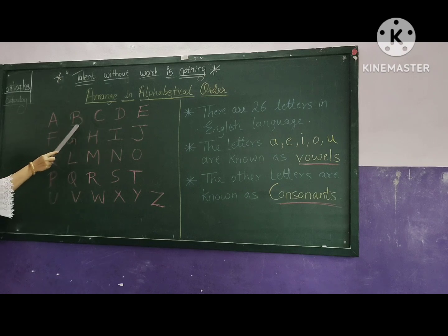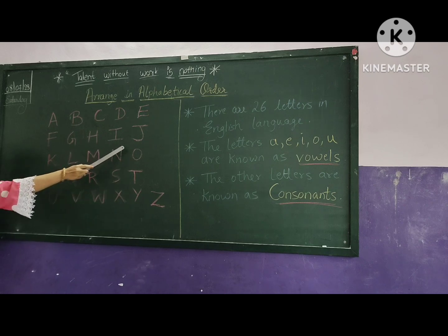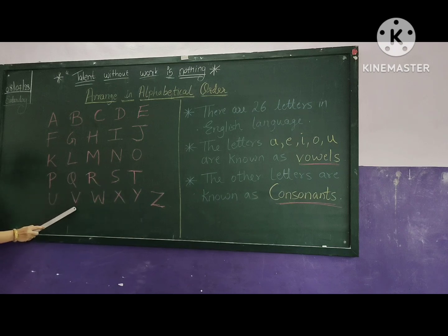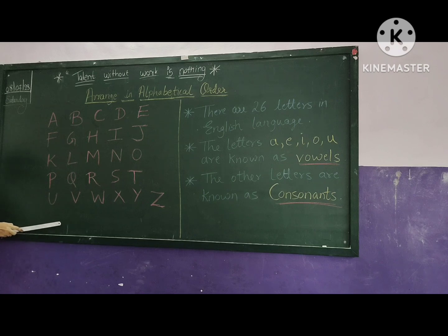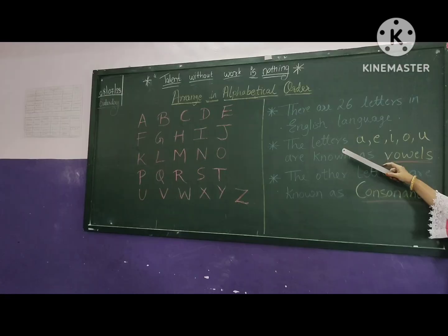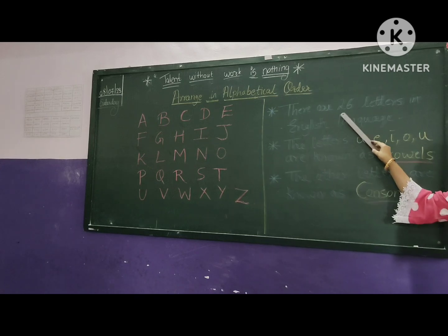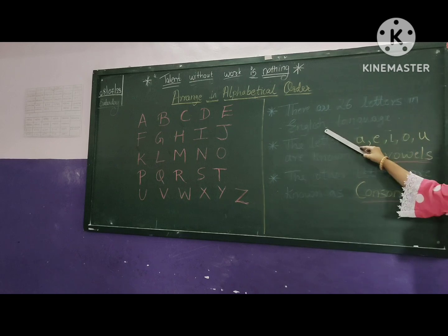A, B, C, D, E, F, G, H, I, J, K, L, M, N, O, P, Q, R, S, T, U, V, W, X, Y, Z. These are the English alphabets. How many English alphabets are there? There are 26 letters in the English language.